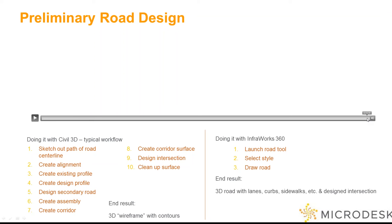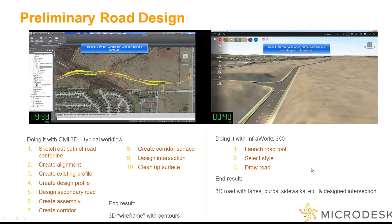Looking at the end result: once you have completed both workflows, in Civil 3D you'll have a 3D wireframe of your road with a top surface and some contours. If this does pass through and become your construction docs, that's great — you're already halfway there. On the other side, in InfraWorks, you get a 3D road with all the lanes, striping, curb and gutter, and sidewalks — and you get a logical design.